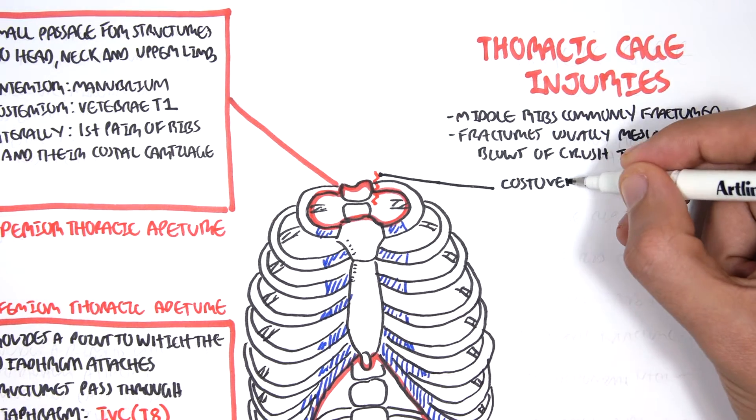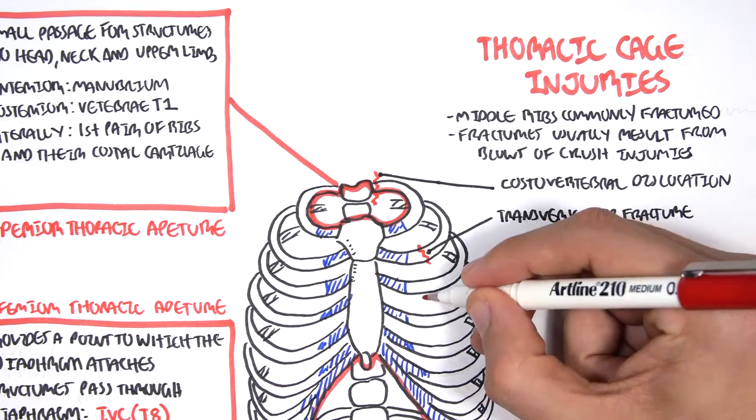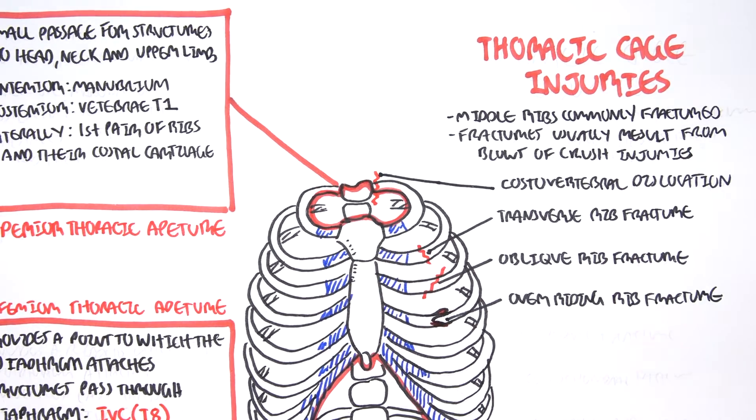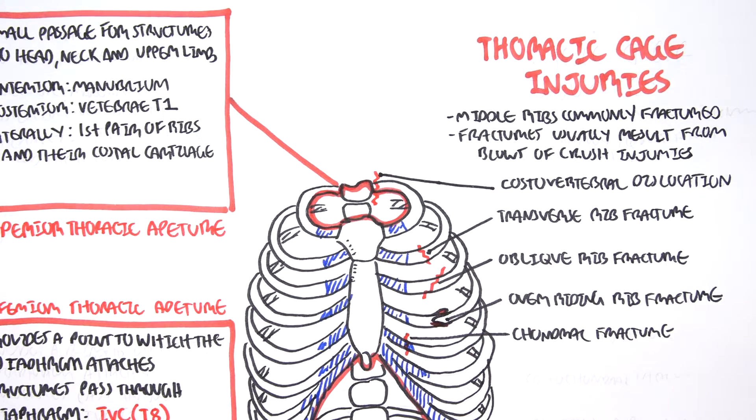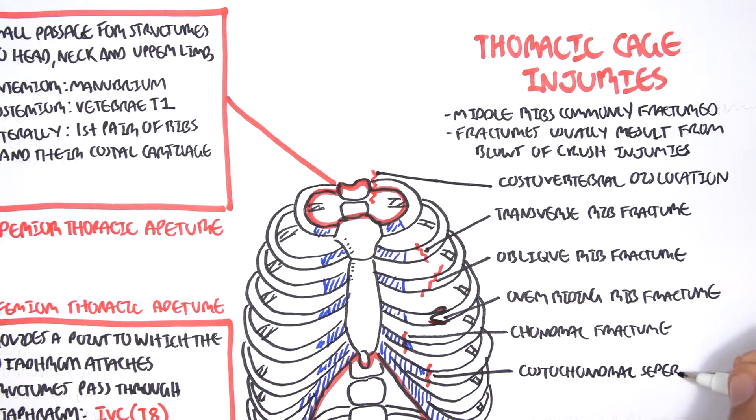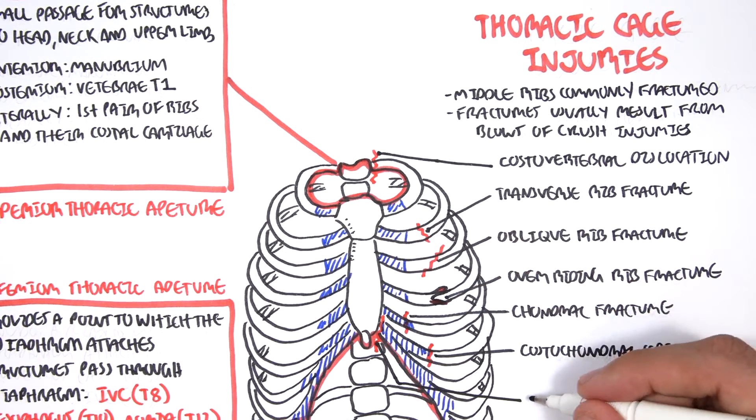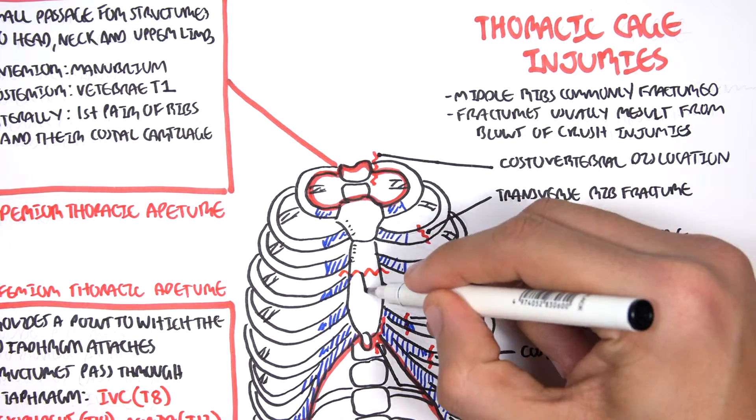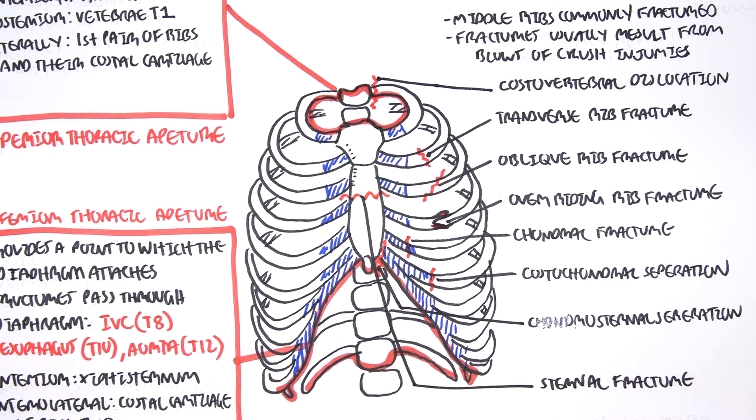And these can be things such as a costovertebral dislocation here, a transverse rib fracture, an oblique rib fracture, an overriding rib fracture, so it goes over, chondral fracture within the cartilage, costochondral separation, the separation between the cartilage and the bone, chondrosternal separation, so that's sternal involvement, as well as a sternal fracture. And this is right in the center of the sternum.